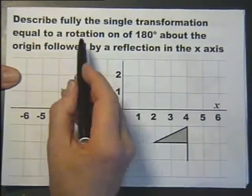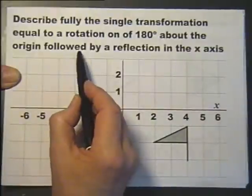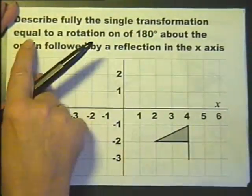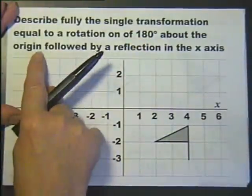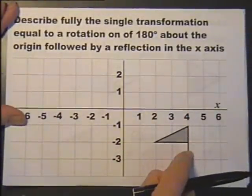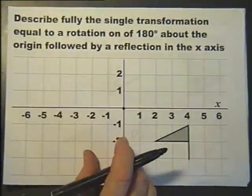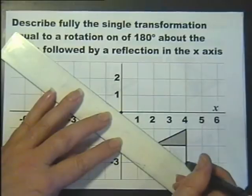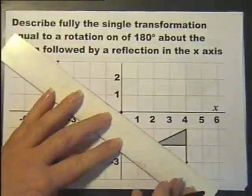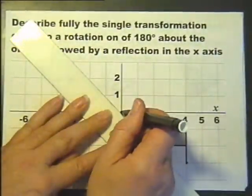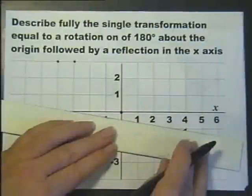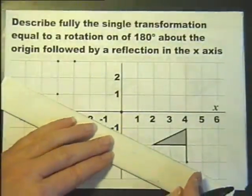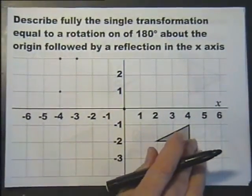Describe fully the single transformation equal to a rotation of 180 degrees about the origin followed by a reflection in the x-axis. With any shape, I'll use this one. I'll do the rotation of 180 degrees, follow it by a reflection in the x-axis, and then figure out what single transformation that is. So rotating 180 degrees about the origin — let's just take each point through the centre of rotation.